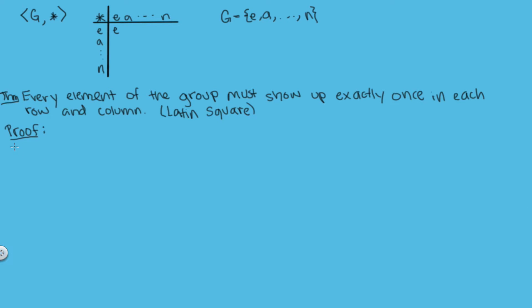So let's go ahead and start our proof of this. There's actually going to be two parts to our proof. The first part is that no element can show up twice in any row or column. I'm just going to show the proof for any row since the proof for a column is essentially the same.